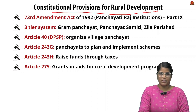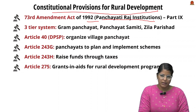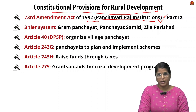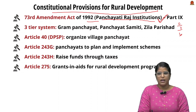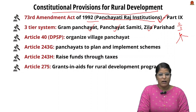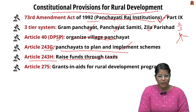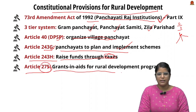Regarding constitutional provisions for rural development, the first is the 73rd Amendment Act of 1992, which led to uniform establishment of Panchayati Raj institutions across states with a three-tier structure — Gram Panchayat, Panchayat Samiti, and Zilla Parishad. The DPSP under Article 40 mandates organizing village panchayats. Under Article 243G, panchayats can plan and implement schemes; under Article 243H, they can raise funds through taxes; and under Article 275, they can receive grants and aid for rural development.